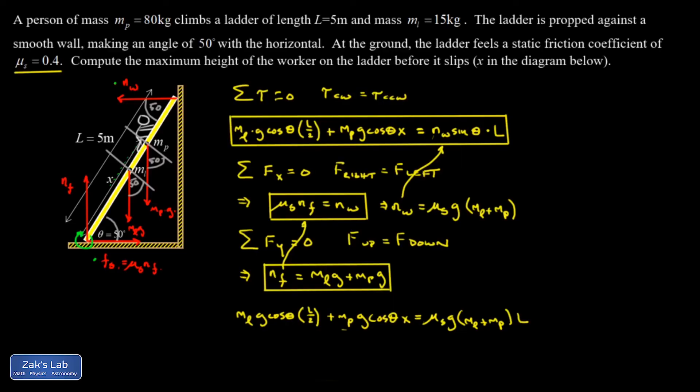So I didn't see a lot of advantage to staying symbolic here. I just went ahead and plugged in all the numbers at this step. So the mass of the ladder was 15 kilograms, g is 9.8, theta is 50 degrees, the length of the ladder is 5 meters, the mass of the person was 80 kilograms, my static friction coefficient was 0.4.